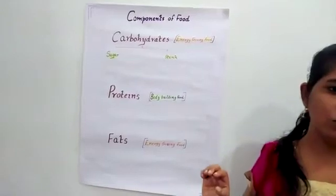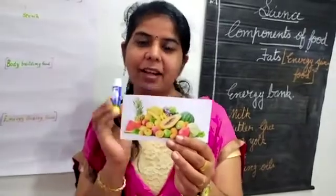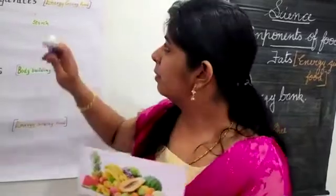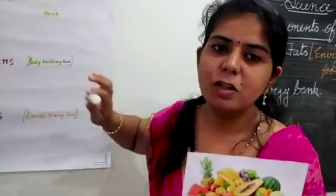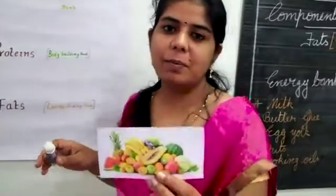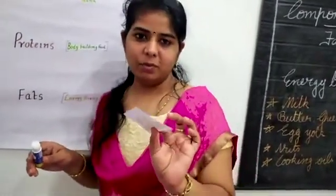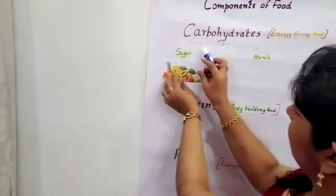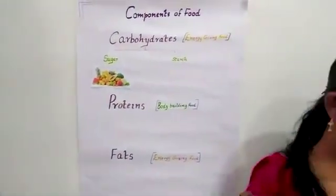Is it clear? Yes. Fruits — which nutrient is present in fruits? It is carbohydrate. Under carbohydrate there are two types: sugar and starch. The nutrient present in fruits is sugar, so I am going to stick it there.